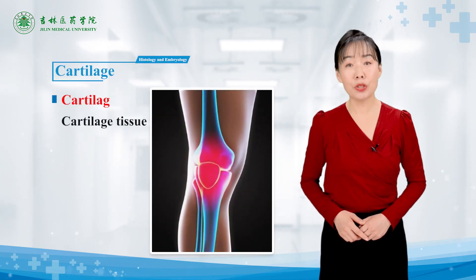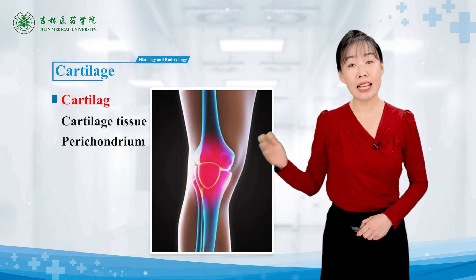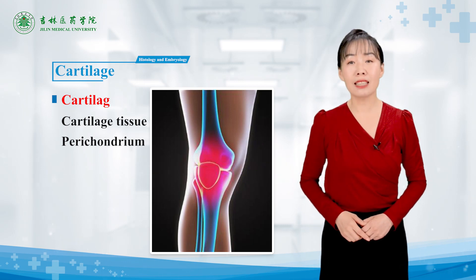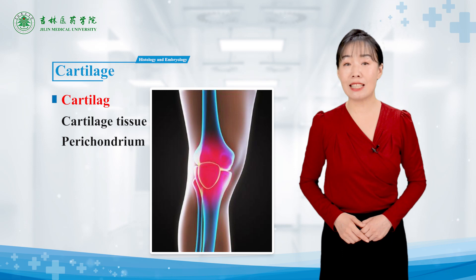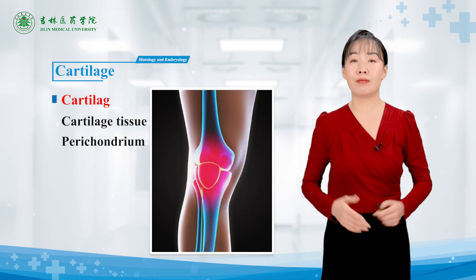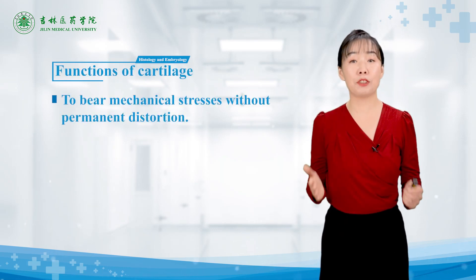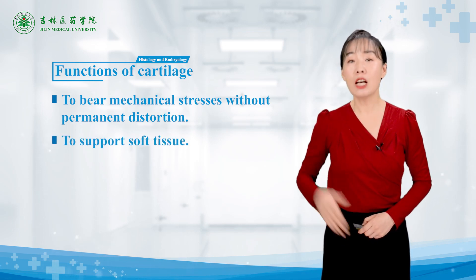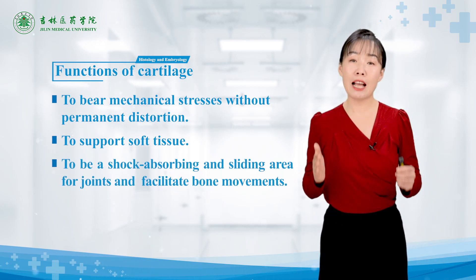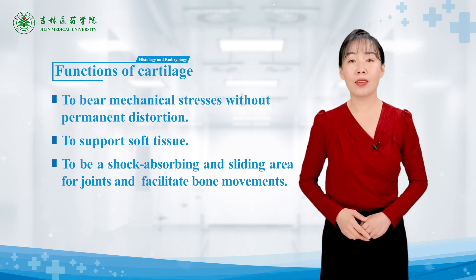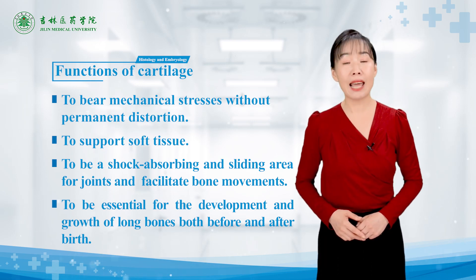Cartilage consists of cartilage tissue and perichondria. Cartilage tissue is a specialized form of connective tissue in which the firm consistency of the extracellular matrix allows the tissue to bear mechanical stresses without permanent distortion. Functions of cartilage include bearing mechanical stresses, supporting soft tissue, and serving as a shock-absorbing and sliding area for joints to facilitate bone movements. It is also essential for the development and growth of long bones, both before and after birth.